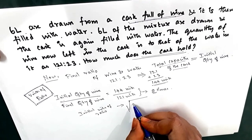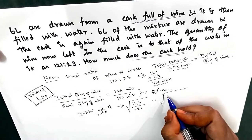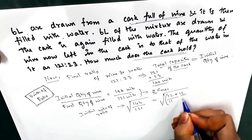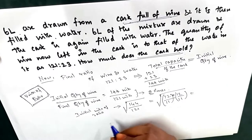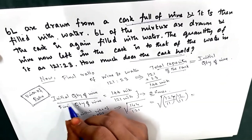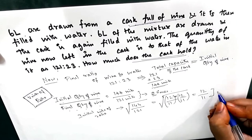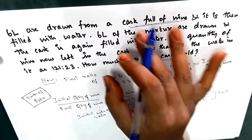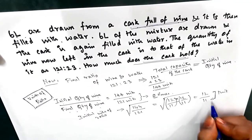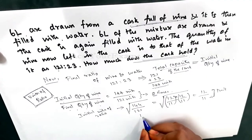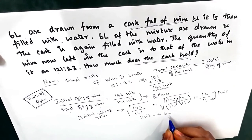Because it is done two times we take the square root; if it were four times we would take the fourth root. So √(144/121) = 12/11. We verify: 12×12 = 144 and 11×11 = 121. So the initial to final wine ratio in units is 12 to 11. The difference is one unit. Initially the cask was full of wine and 6 liters were drawn, so after drawing 6 liters there is a difference of one unit. Therefore one unit equals 6 liters.